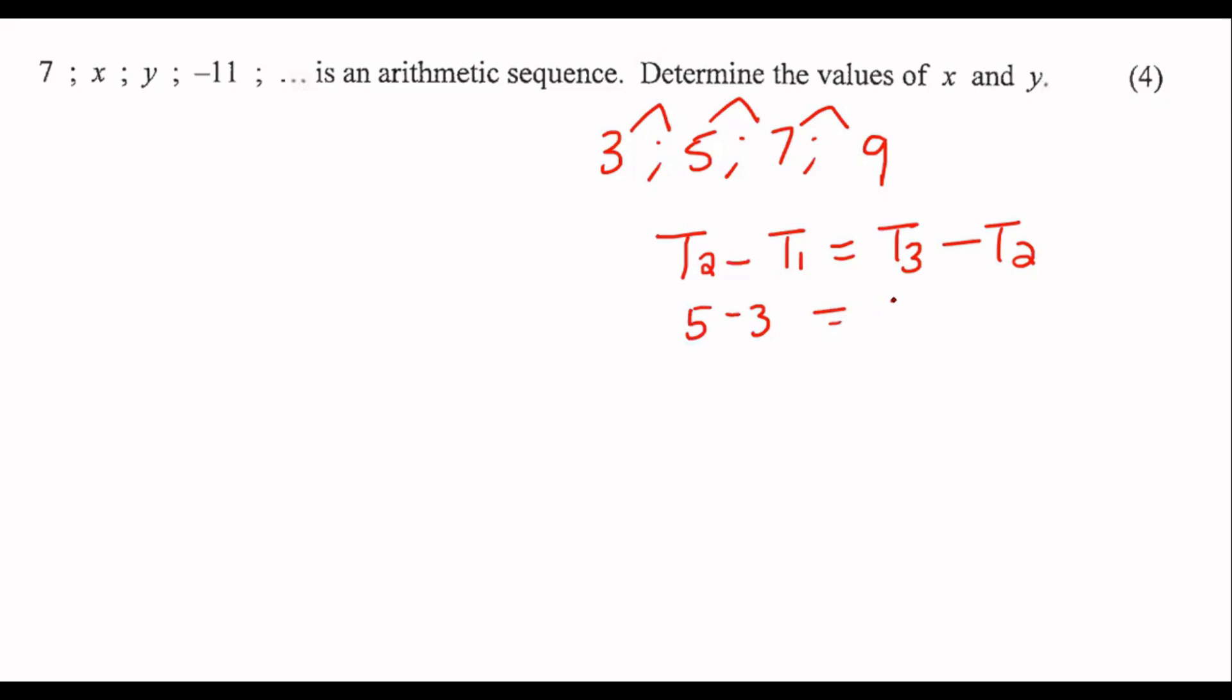It's like 5 minus 3 is the same as 7 minus 5 because it's 2 is equal to 2. You can also say something like term 8 minus term 7 must always be the same as term 7 minus term 6.